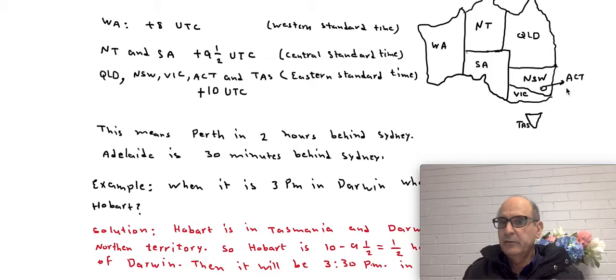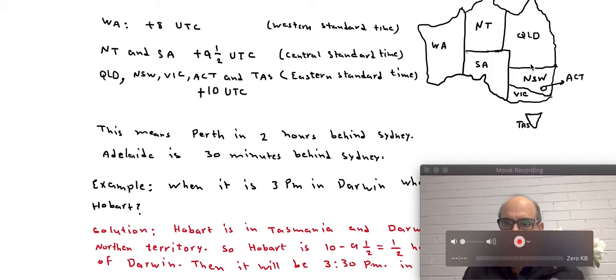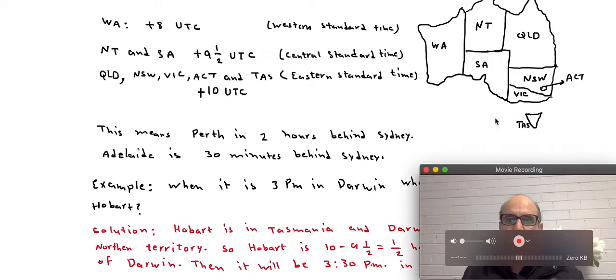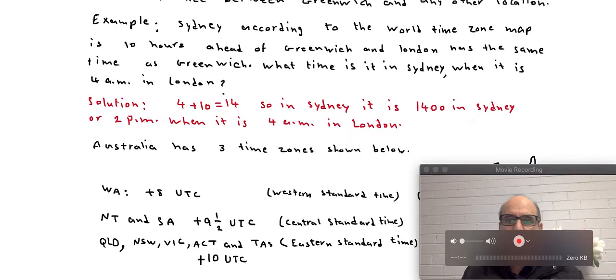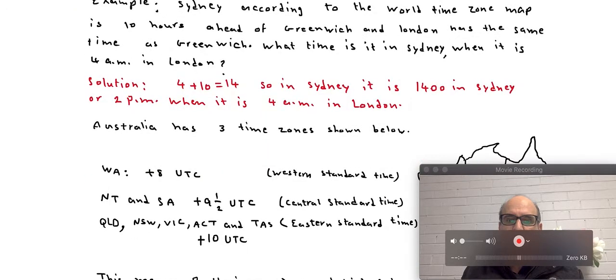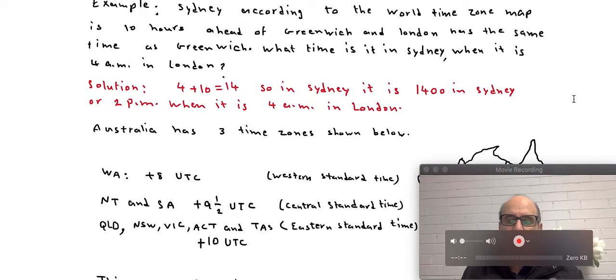So all these states, Queensland, New South Wales, Victoria, ACT and Tasmania, five of them, follow standard time which is basically 10 hours ahead of Greenwich.